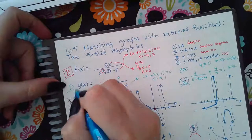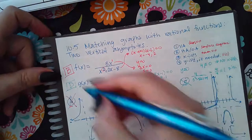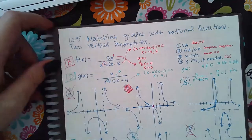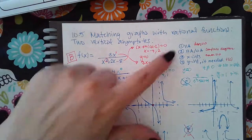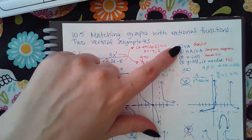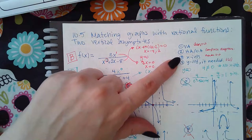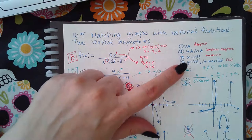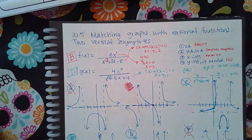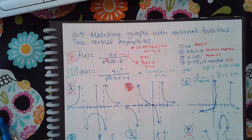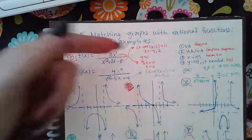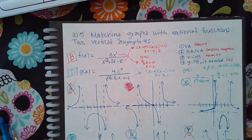It's just a process of elimination: the vertical asymptotes will narrow it down to about three, the horizontal asymptotes will probably narrow it down to two, and the x-intercepts will usually give you the answer. If not, go the extra step and find the y-intercept. Do these four steps for each function they give you.